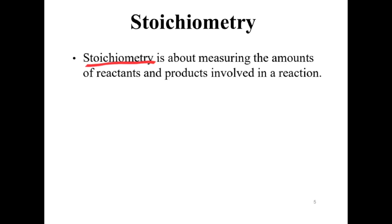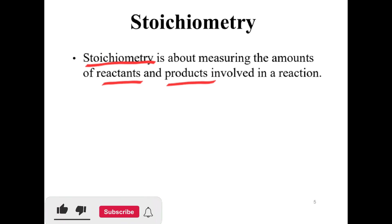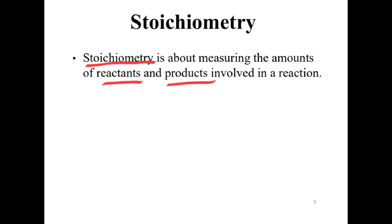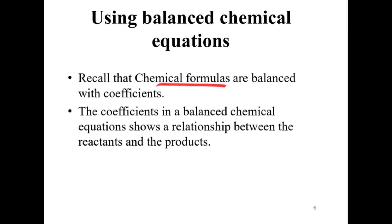Stoichiometry is about measuring the amount of reactants and products involved in a reaction. Chemical formulas are balanced with coefficients. The coefficients in a balanced equation show a relationship between the reactants and the products.